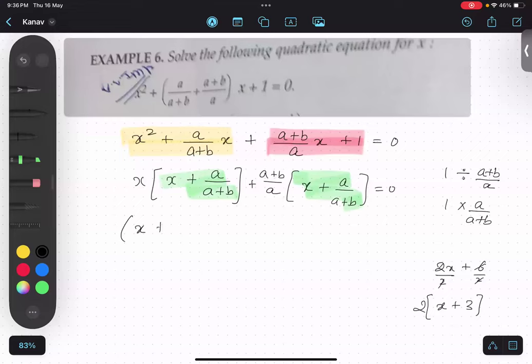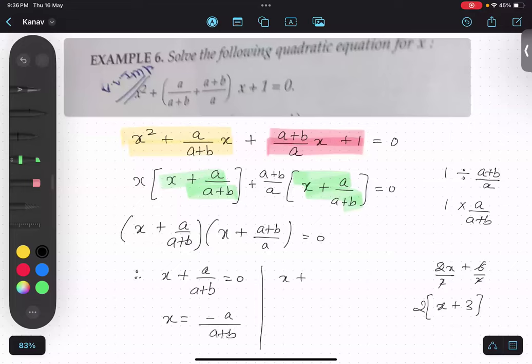Factorization. x plus a upon a plus b is my first factor. And x plus a plus b upon a is another factor. So therefore, x plus a upon a plus b equals to 0. x equals to minus a upon a plus b. That's my first answer. x plus a plus b upon a equals to 0. So x equals to minus a plus b upon a. This is the answer second. These are the two factors.